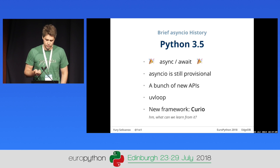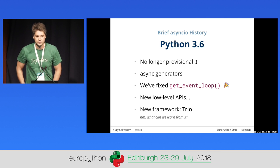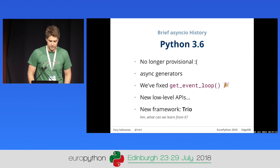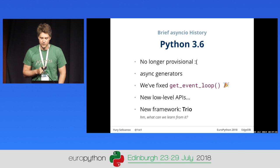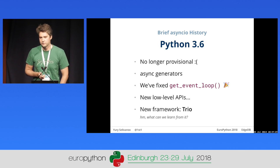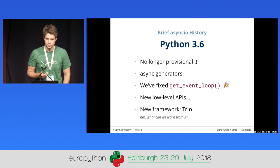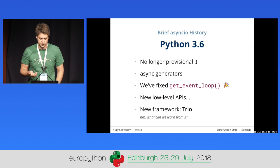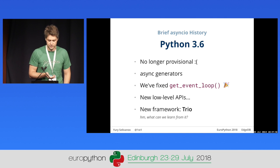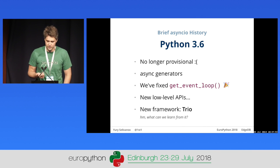In Python 3.6, async stopped being provisional — the evolution cycle got longer and we had to wait for a major release. We got asynchronous generators and asynchronous comprehensions. We also fixed the get_event_loop function, largely thanks to Curio, because before Python 3.6, get_event_loop was really weird. It could return a new event loop or a random event loop — it was completely unpredictable, depending on the current policy. You couldn't reliably use it to get the currently running event loop.